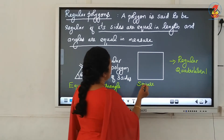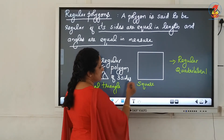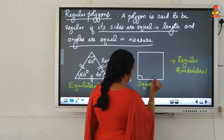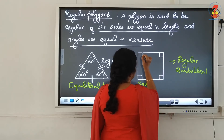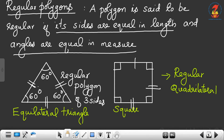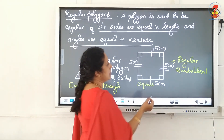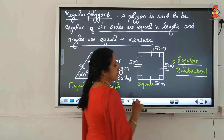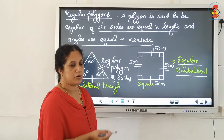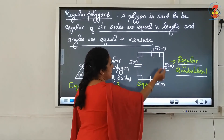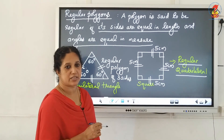If all sides are equal in length and all angles are equal in measure, consider the square. Each angle is equal to 90 degrees, and all sides are of the same length — for example, if one side is 5 centimeters, all sides are 5 centimeters. Therefore, a square is a regular polygon. It is a regular quadrilateral — a regular polygon of four sides.